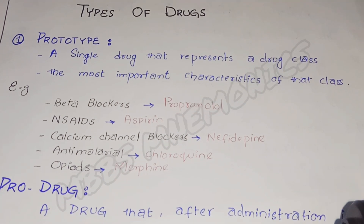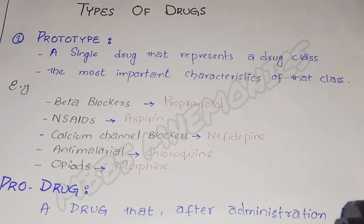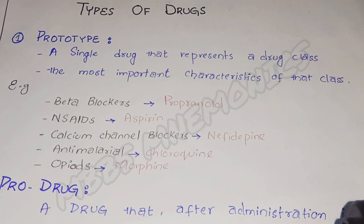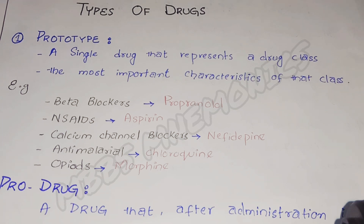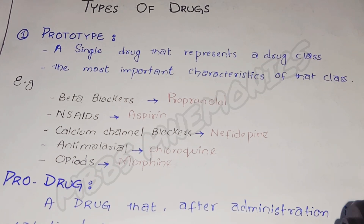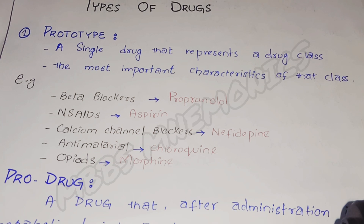For example, beta blockers is a group of drugs including different drugs, and propranolol is one of them. Propranolol shows all the properties of the beta blockers group. Then we have aspirin, which is included in the NSAIDs group. By knowing the properties of aspirin and its mechanism of action, we come to know about the NSAIDs class.